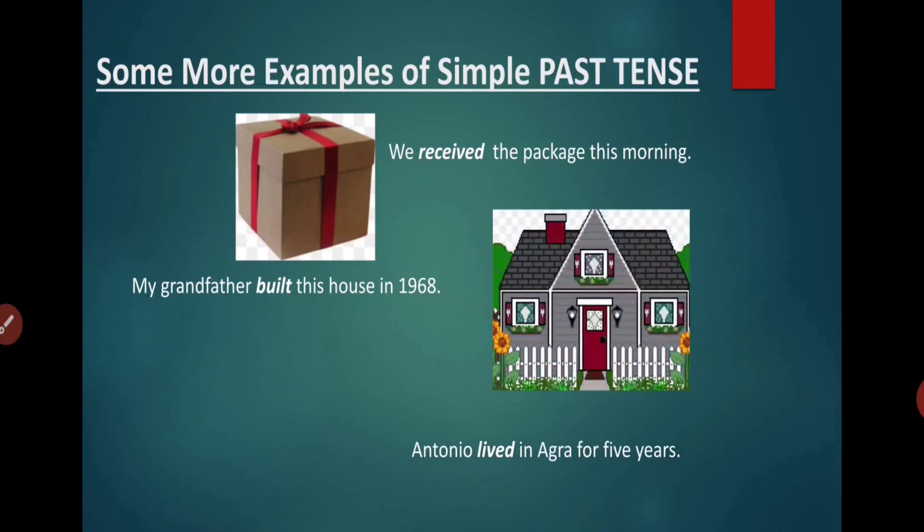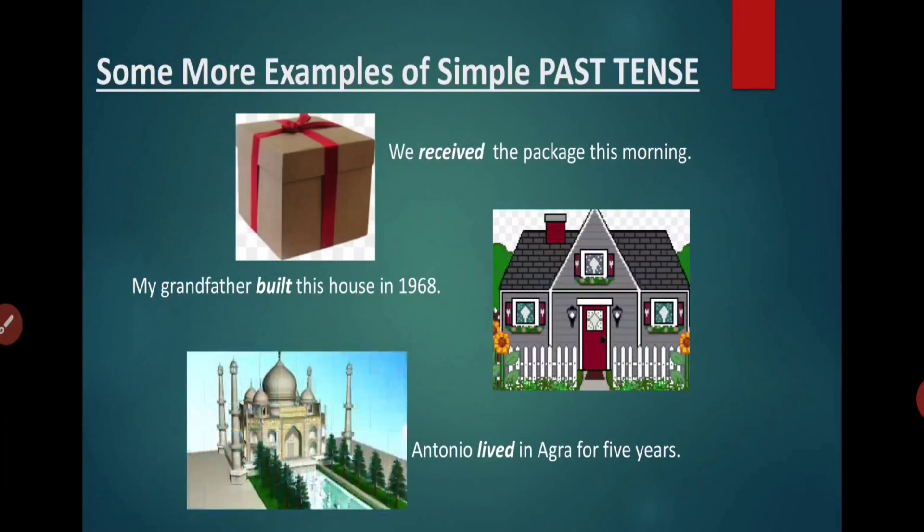So next example, in the last example is Antonio lived in Agra for five years. So Antonio lived means right now he is not living. He is not living there. So Antonio lived in Agra for how many years? Five years.